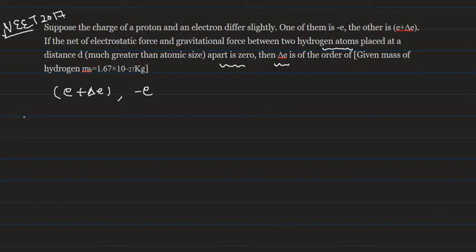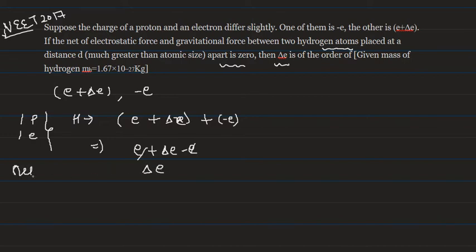Students, we have hydrogen atom like we have one proton and one electron there. The hydrogen atom is being made by a net charge of E+ΔE plus minus E because one charge is E+ΔE and one charge is -E. So the net charge on H atom is ΔE.